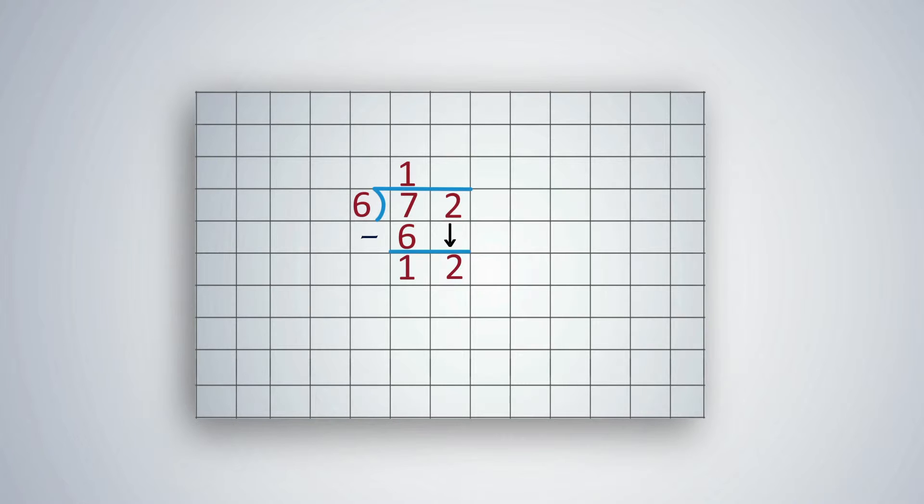10 plus 2 is 12. When 12 is equally distributed to 6, each gets 2. This 2 has to be written in the quotient. All units are now distributed and we are left with nothing. The division process is complete and the quotient or answer is 12.